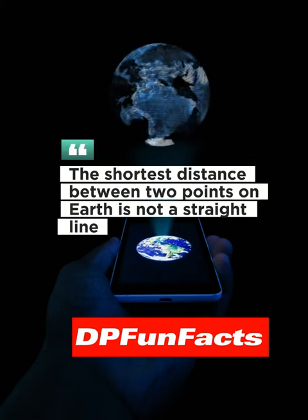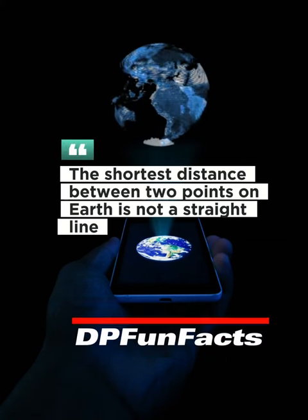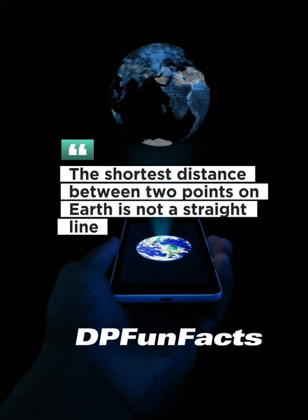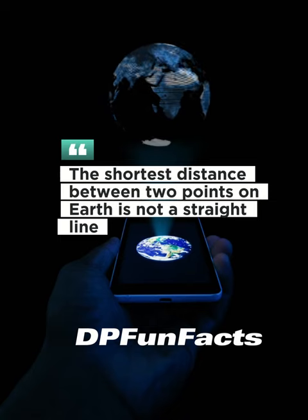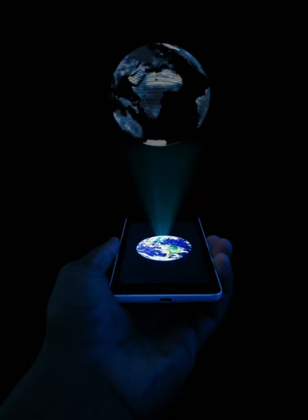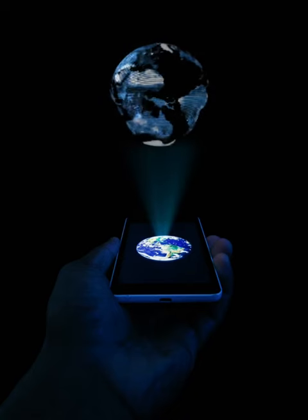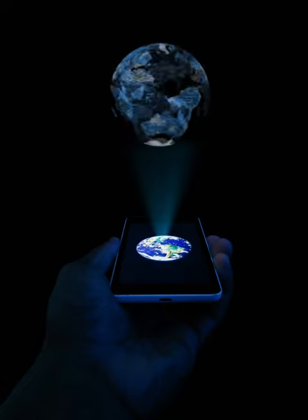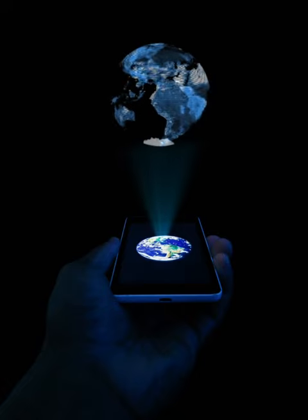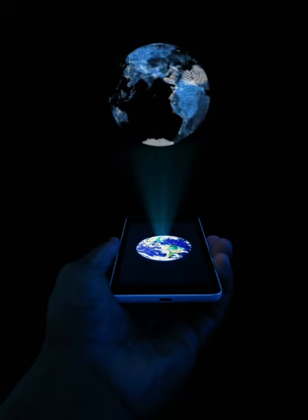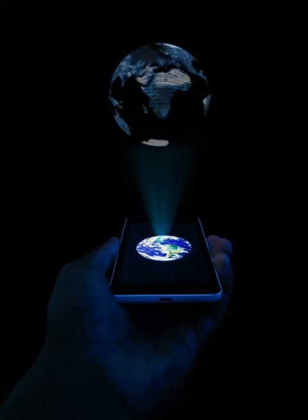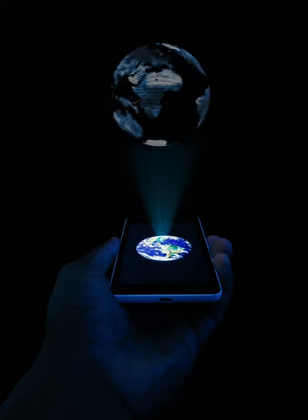The shortest distance between two points on Earth is not a straight line due to the curvature of the Earth. The shortest distance between two points on the globe is actually a path called a great circle. This means that if you were to travel in a straight line from one point to another, you would actually be traveling along a curved path.